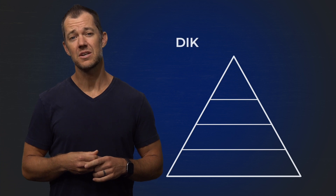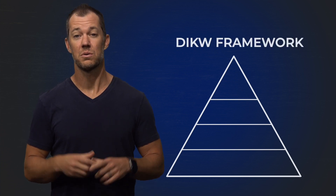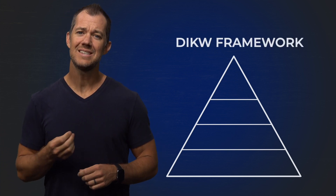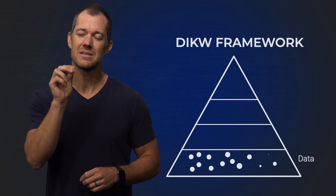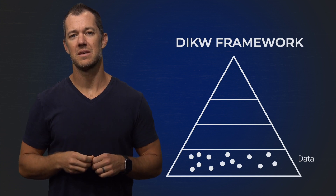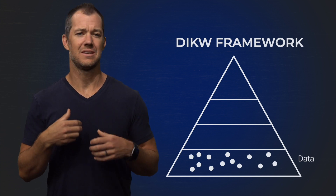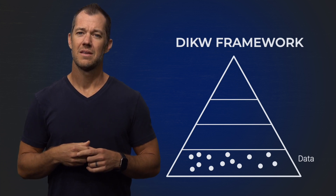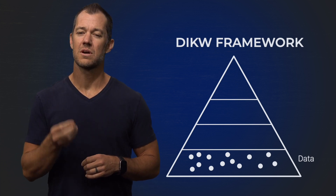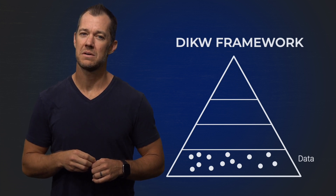Before we dive into how to solve this problem, we first need to explain exactly what is data. There's a framework that describes different types of human information. This is called the DIKW framework, or triangle. The D stands for data. Data in this case are disparate pieces of information that are disconnected from other things. We can think of financial data, scientific data, data about space or time. These data are recordings or collections of events.